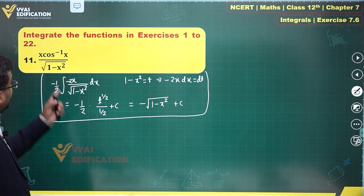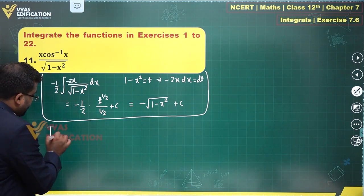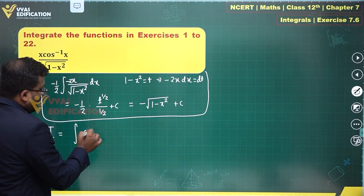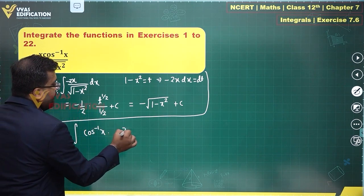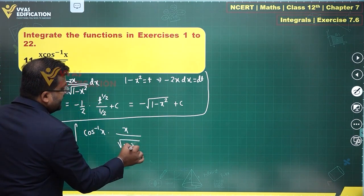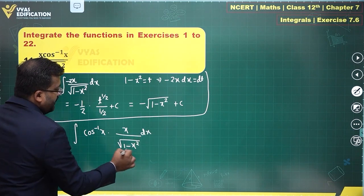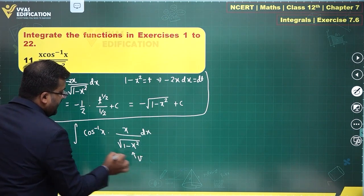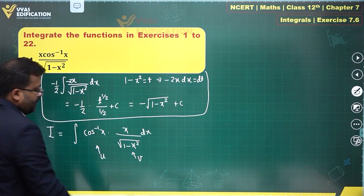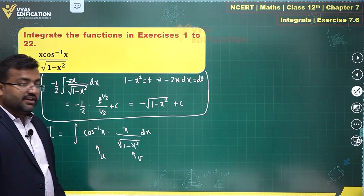Now, for integrating this function, i equals integral of, you have cos inverse x, you have x upon root of 1 minus x square dx. You can take this as v and you can take this as u. First function and second function. Once you do it, so the integral becomes equal to what?